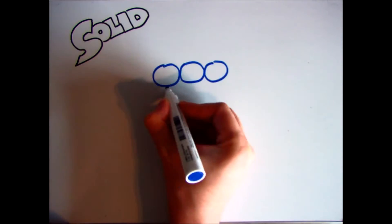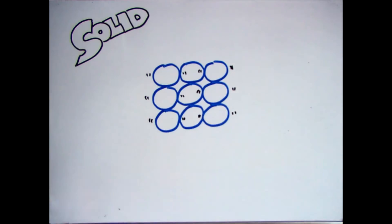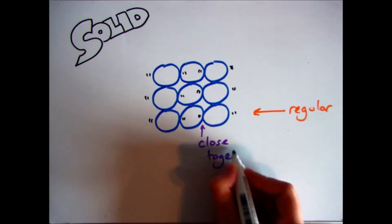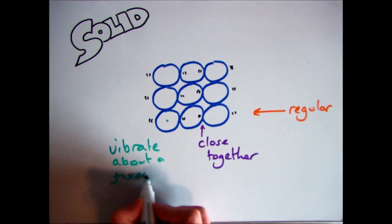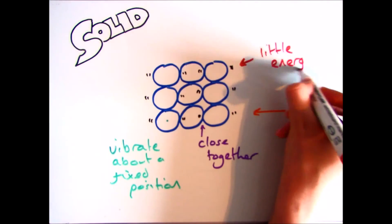So if we focus on the solid particle model then, as you can see all these particles are really close together and touching. We say that they have a regular pattern because they're in rows, and we also say that they vibrate about a fixed point. They have a fixed shape and a fixed volume, and they have very low energy.